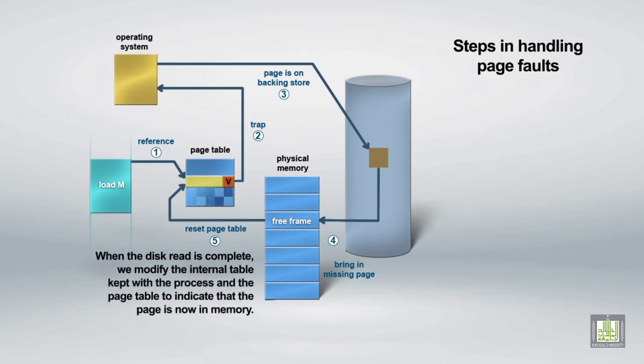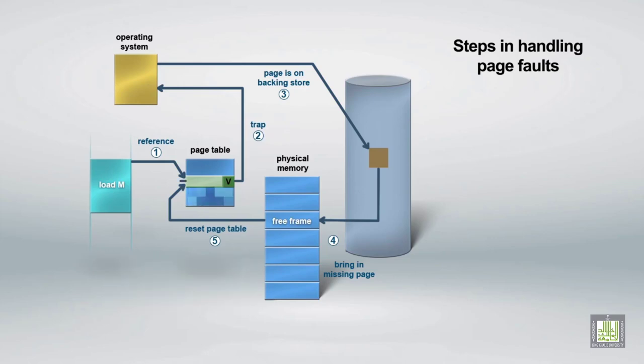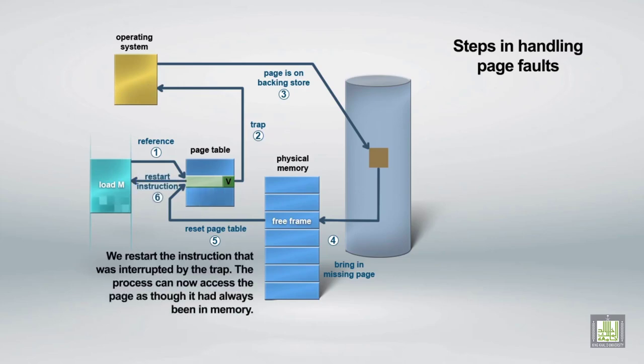When the disk read is complete, we modify the internal table kept with the process and the page table to indicate that the page is now in memory. We restart the instruction that was interrupted by the trap. The process can now access the page as though it had always been in memory.